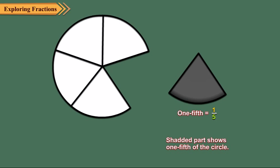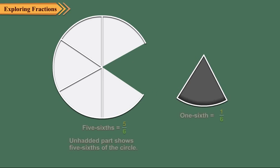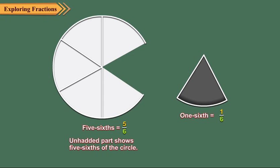Do you know what part of the circle is unshaded? Since out of the six equal parts, five parts are unshaded, so the unshaded part represents five-sixths. It is written as five upon six.